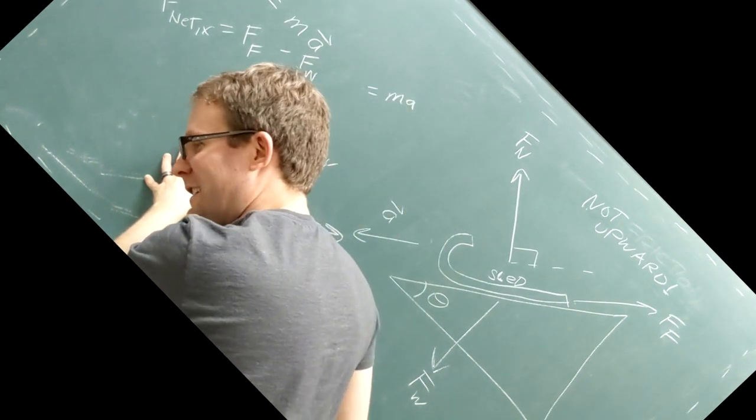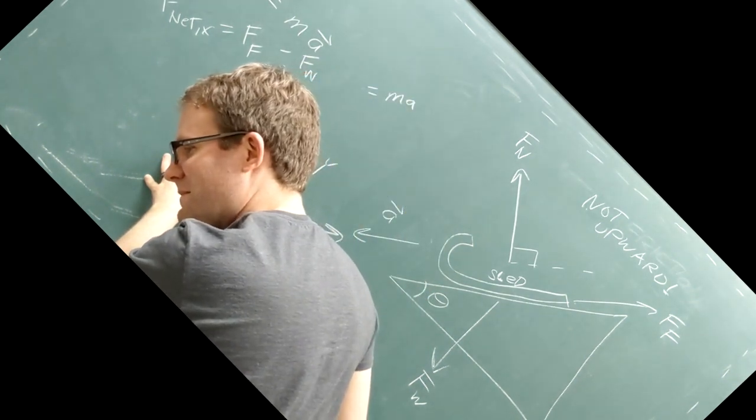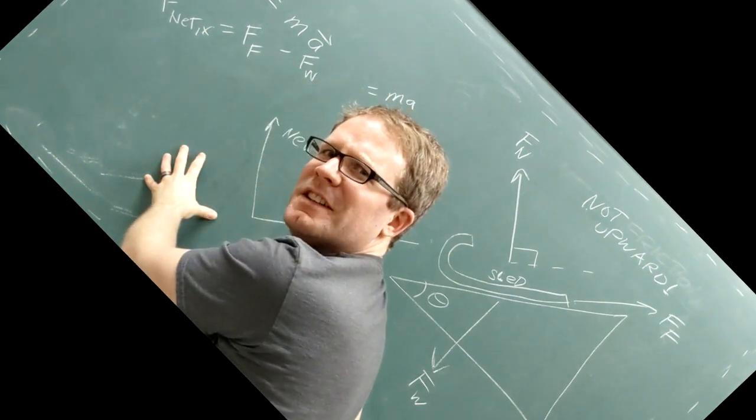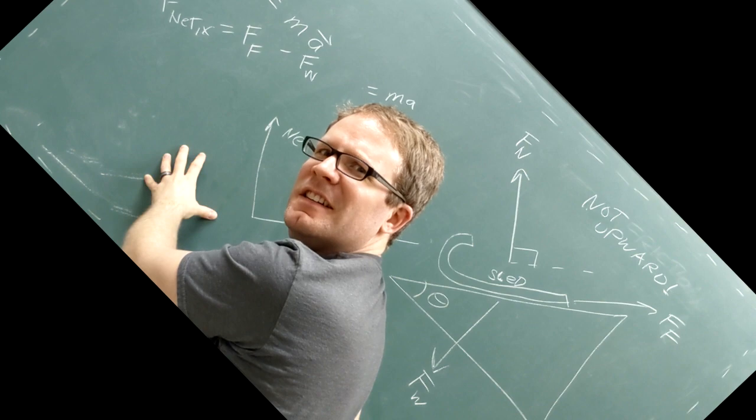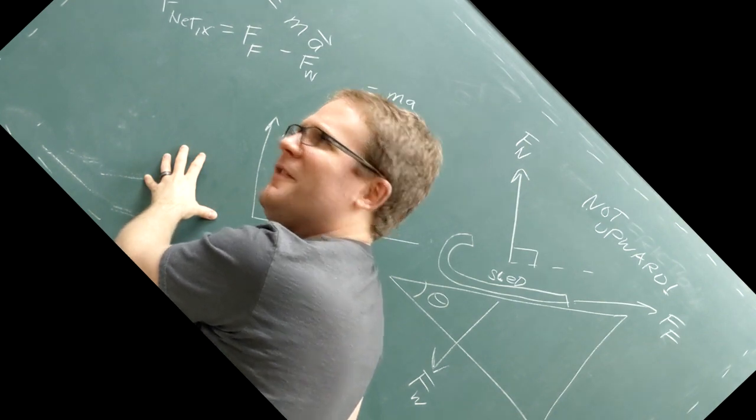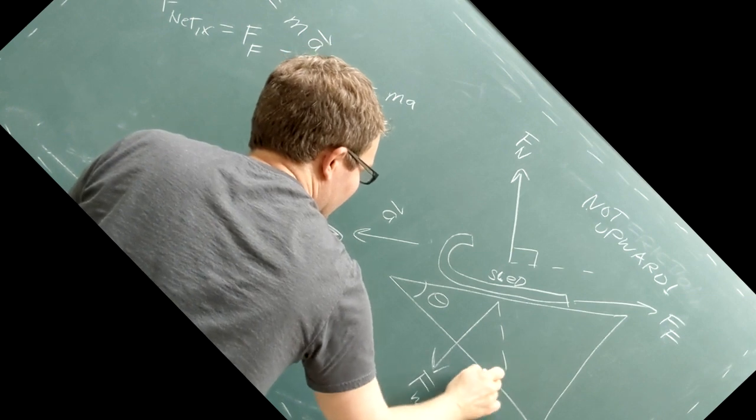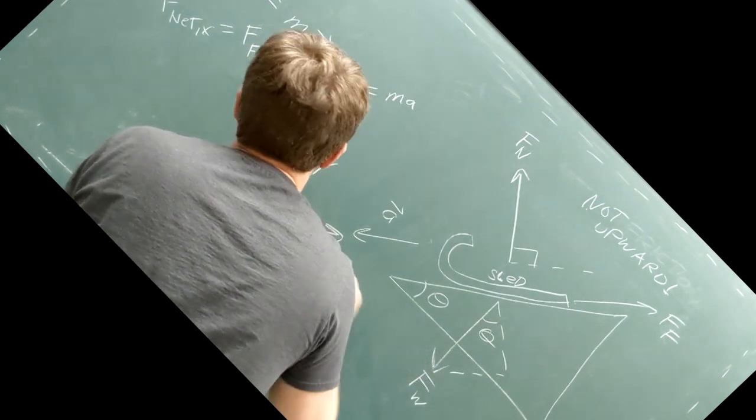In the new x-direction, there are two forces. Friction pulling up the hill and a small piece of the weight pulling down the hill. But weight doesn't go in the x-direction. That's why this is the new x-direction. Okay, fine. To get this small piece of the weight, we multiply the magnitude of the weight by the sine of the angle of the hillside.